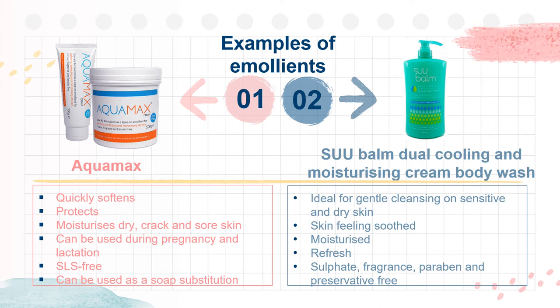2. Suu Balm Dual Cooling Moisturizing Cream Body Wash — it is ideal for gentle cleansing on sensitive and dry skin, leaving skin feeling soothed, moisturized, and refreshed. It is free from sulfate, fragrance, paraben, and preservative.